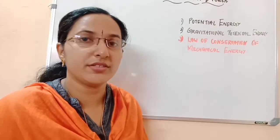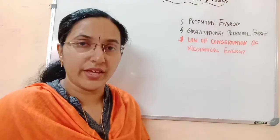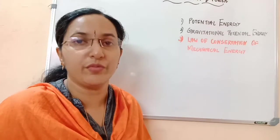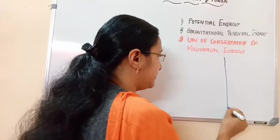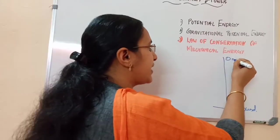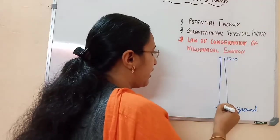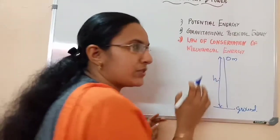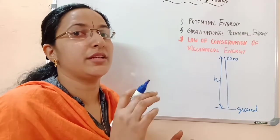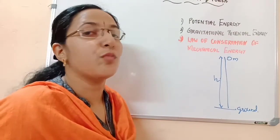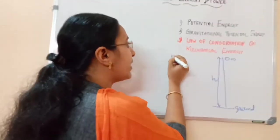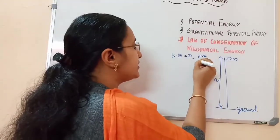Whatever happens — whether kinetic energy is converted to potential energy or potential energy is converted to kinetic energy — the sum of potential energy and kinetic energy will always be the same constant value everywhere. We can prove this with an object coming down towards earth. If an object has mass M and is at a particular height H, at the top of that position it has only potential energy and its kinetic energy will be zero, because at maximum height velocity is zero. Therefore kinetic energy is zero and potential energy equals MGH.